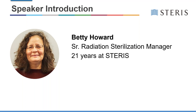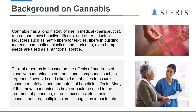I've been in STERIS for over 20 years and all of the things we're talking about today cover the growth of what can be done with radiation processes. Cannabis has a very long history of use in medical and therapeutic applications, also for recreational purposes due to its psychoactive effects. There's also a very large industry for hemp — fibers used in textiles, building materials, plastics, lubricants, and hemp seeds used frequently as a nutritional source.